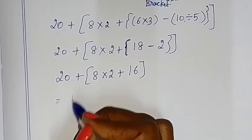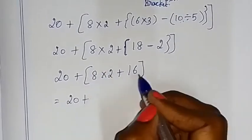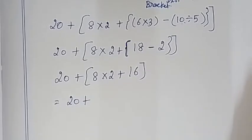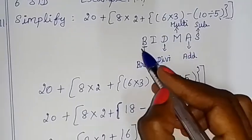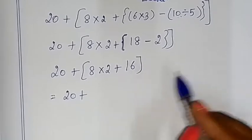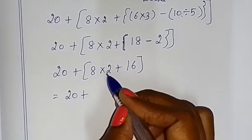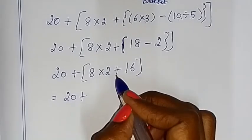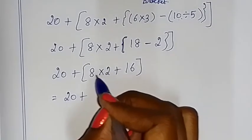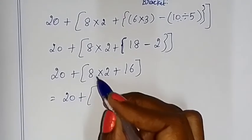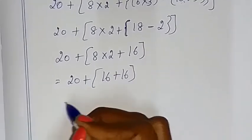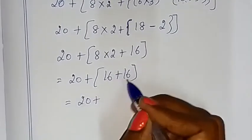Now we solve the remaining bracket. The first bracket is finished. We go to the BIDMAS rule — first brackets, then multiplication, then addition. So 8 into 2 is 16. Now: 20 plus, open bracket, 16 plus 16 is 32.